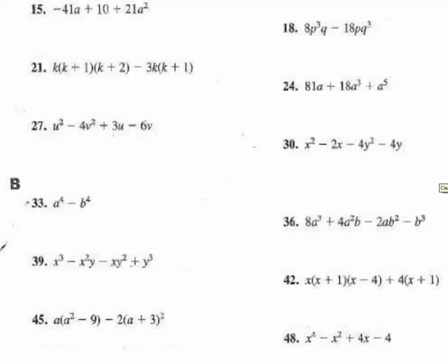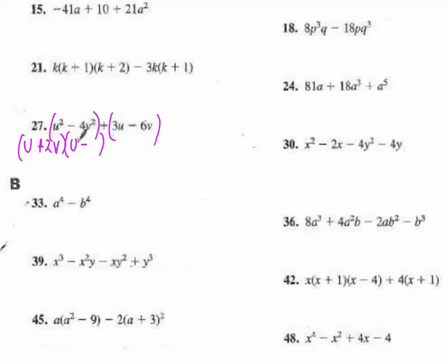Number 27 — this one's a little trickier, so we need to group things. We talked about grouping similar terms in class, but we're not going to find a trinomial here, so I'm going to try to factor this as two binomials. The first thing I notice is that I have u squared minus 4v squared, and I know both of those are perfect squares, so this is a difference of squares. I'm going to have my pair of factors with a plus and a minus: u and 2v, u and 2v.